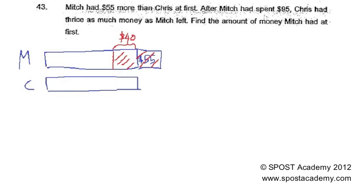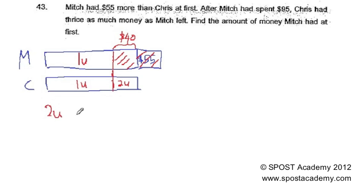Chris had thrice as much money as Mitch left. So if you look at this model, if this is to be one unit, this is one unit, this would actually be 2 units. Because Chris must have thrice as much money as Mitch left. So from this model you can see that 2 units is equivalent to $40.